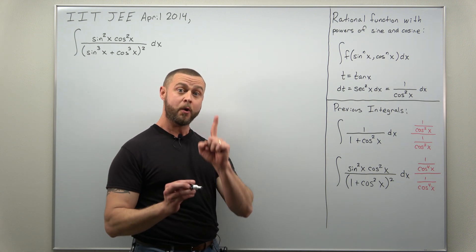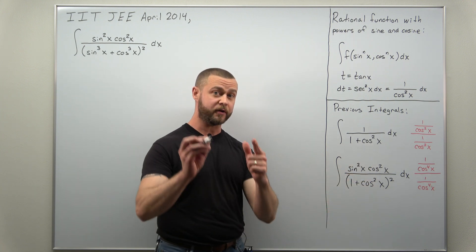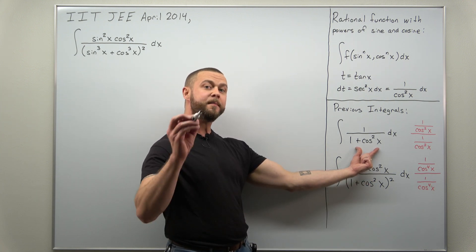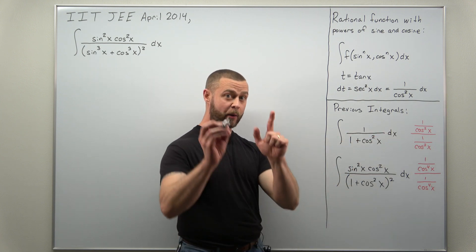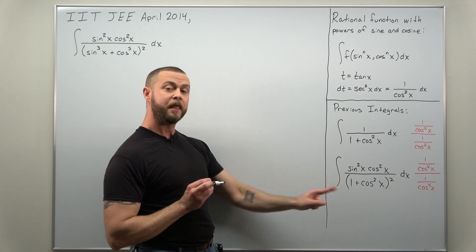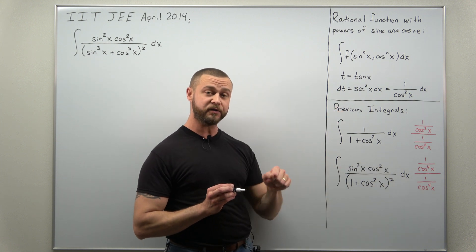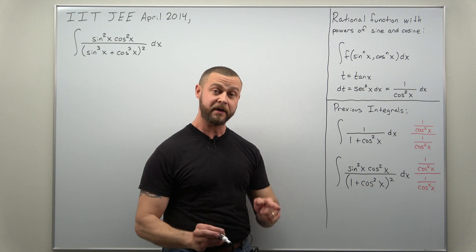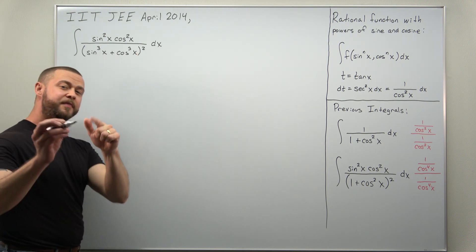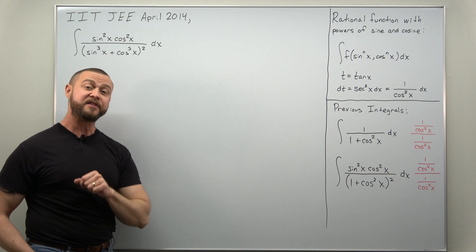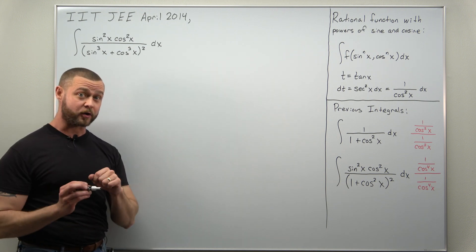In the previous two problems, we multiplied by 1 in different forms, guided by looking at the power of cosine in our integral. The first problem behaved like cosine squared, so we multiplied by 1 in the form (1/cos²) divided by (1/cos²). The last problem's denominator behaved like cosine to the fourth power, so we multiplied by 1 in the form (1/cos⁴) divided by (1/cos⁴). In our current integral, we have cosine cubed squared, which behaves like cosine to the sixth power of x. So here we'll multiply by 1 in the form (1/cos⁶) divided by (1/cos⁶).